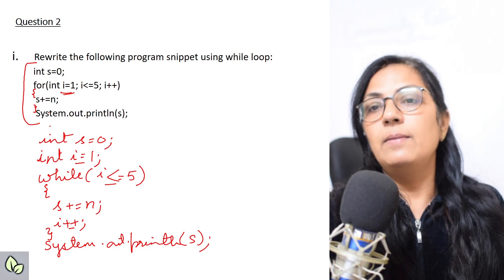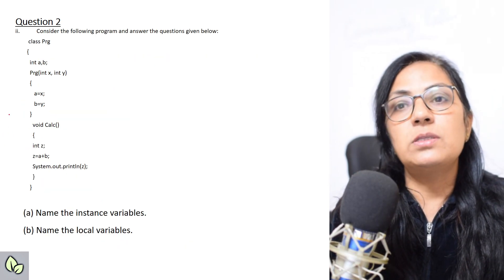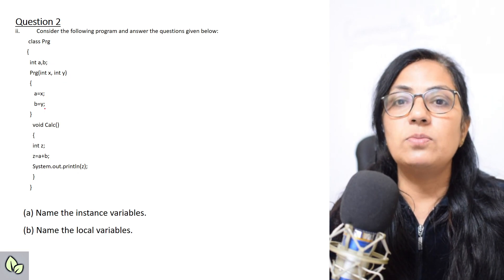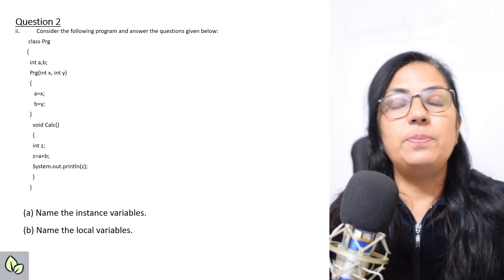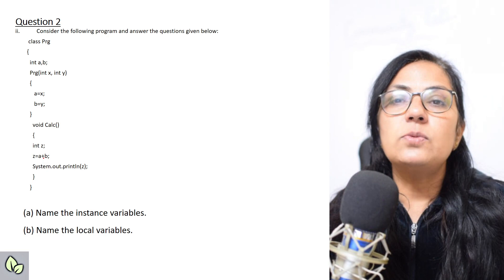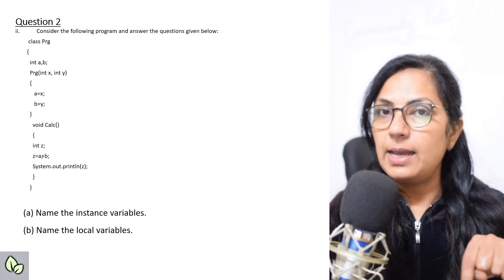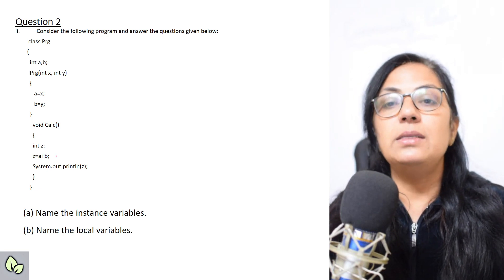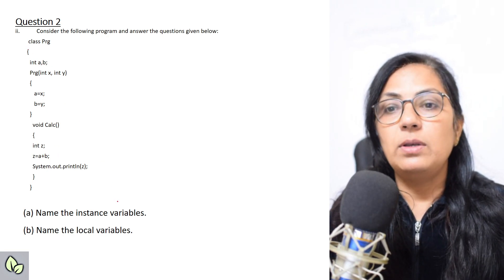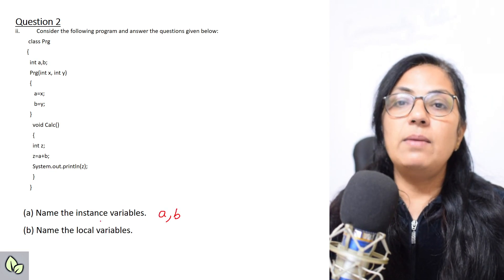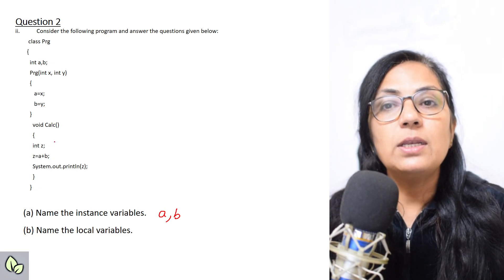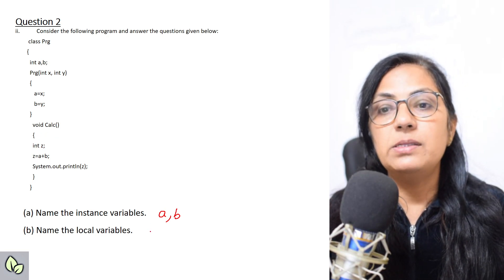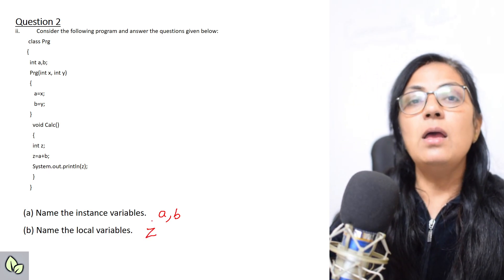Next question: consider class Prg with int a, b; constructor Prg(int x, int y) sets a=x, b=y; method calc() declares int z = a+b and prints z. Name the instance variables — variables declared within the class body but outside any method without static: those are a and b. Name the local variables — declared inside a method: only z is a local variable.